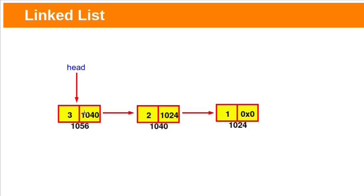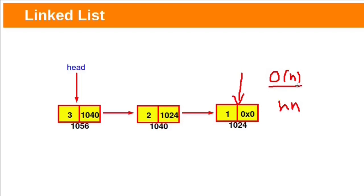Since linked lists are not stored contiguously in memory, a linked list can grow and shrink as needed. In the previous class, we saw stack implementation with linked list by inserting at the tail position, which takes O(n) time because we need to find the top every time. But if we place the newly inserted node at the head, it will take only O(1) time.